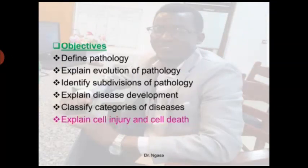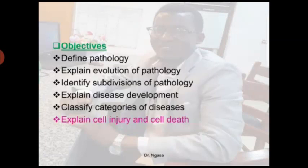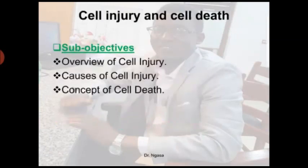In our previous presentation, we managed to cover the first five objectives: the definition of pathology, evolution of pathology, subdivisions of pathology, disease development, and categories of disease. Today we will be discussing the last objective, which is about cell injury and cell death. The sub-objectives prepared are the overview of cell injury, causes of cell injury, and the concept of cell death.